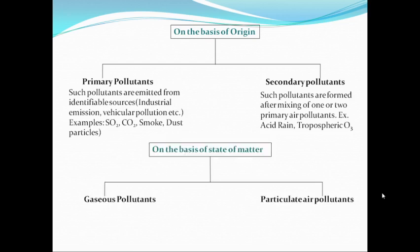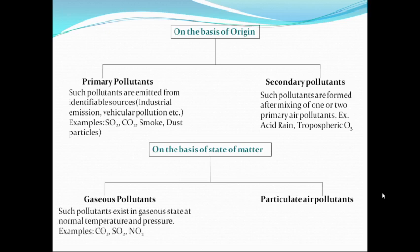Another method of classifying air pollutants could be on the basis of state of matter. In this category, we can classify air pollutants as gaseous air pollutants as well as particulate air pollutants. Gaseous air pollutants exist in the gaseous state at normal temperature and pressure, and examples could be carbon dioxide, sulfur dioxide, as well as nitrogen dioxide. Particulate air pollutants are such air pollutants which are either solid particles such as smoke particles, or suspended droplets such as acid fumes.